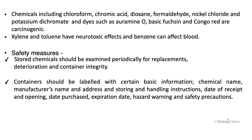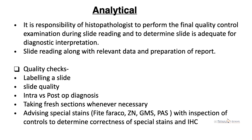In the laboratory, we come into contact with carcinogenic chemicals including chloroform, chromic acid, dioxin, formaldehyde, nickel chloride, potassium dichromate, and dyes like auramine O, basic fuchsin, and Congo red — so proper care and gloves are essential. Xylene and toluene have neurotoxic effects, and benzene can affect the blood, making proper safety measures very important. Stored chemicals should be examined periodically for replacement, deterioration, and container integrity. Containers should be labeled with chemical name, manufacturer name and address, storing and handling instructions, receipt and opening date, expiration date, and hazard warnings and safety precautions.